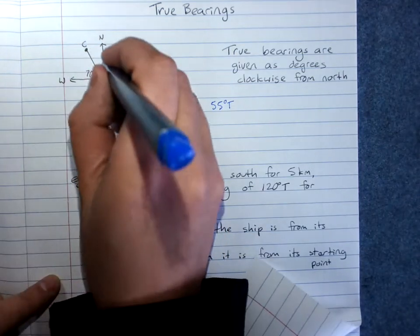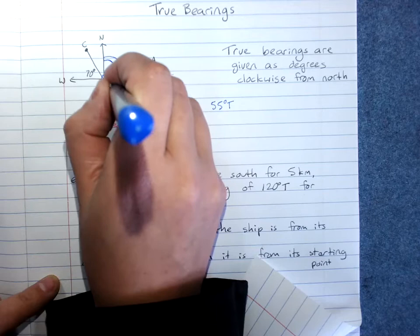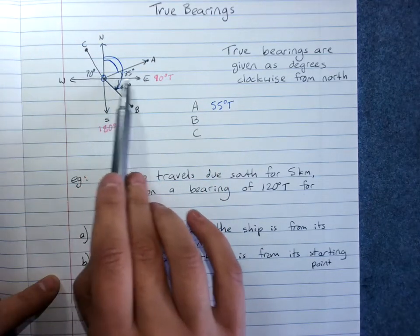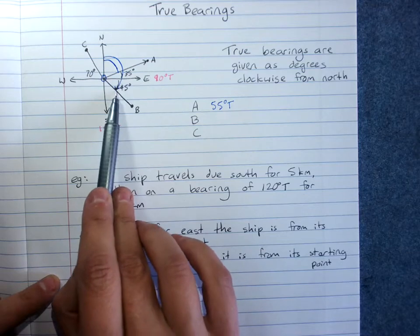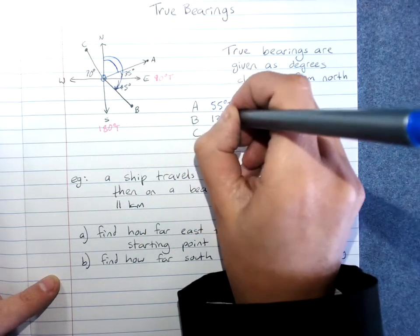To get to B from north clockwise all the way around. We've got as far as east, which is 90 and another 45, so this will be 135 degrees true.